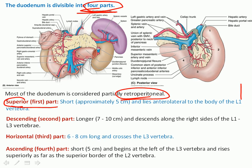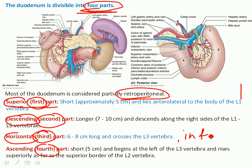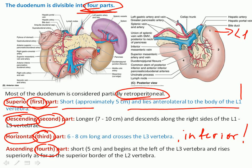Each part of the duodenum has a specific name: you can call them first, second, third, and fourth parts, or superior, descending, horizontal, and ascending. The horizontal part is also called inferior. The superior portion is at the level of L1 vertebra. The descending part runs along the right side from L1 to L3. The horizontal part crosses L3, and the ascending part is approximately five centimeters long, terminating at the right border of L3 and superior border of L2.